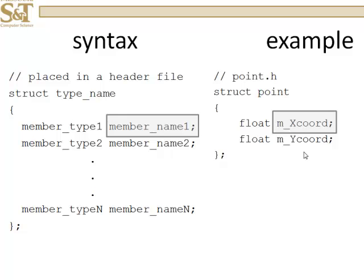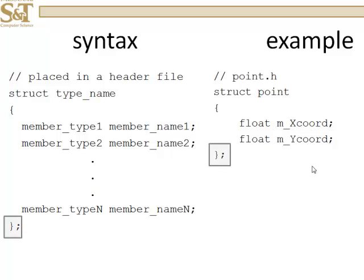Now, I prefer to use the m_ as a prefix to the names of variables that are members of structs and classes. Classes will come later. That way, when you see that variable name in the future in the program, you know that it's a member variable of some user defined type. So, in this case, we have two floats, m_x, m_y, and the last point I want to make is, don't forget that semicolon.